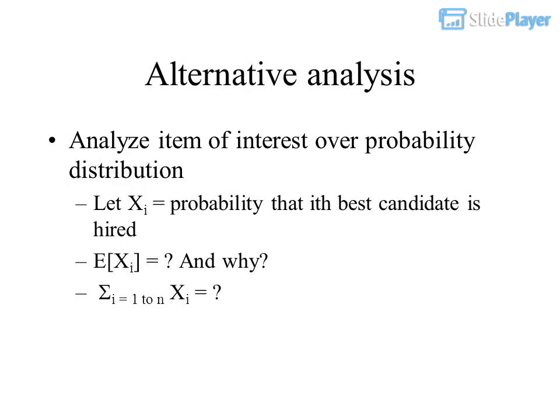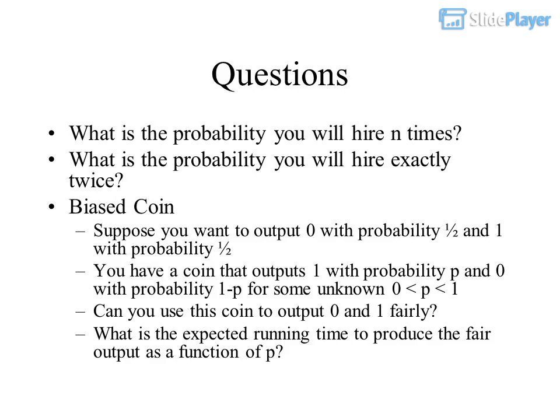Alternative analysis: let Xi equal the probability that the i-th best candidate is hired. Then E[Xi] equals a given value, and the total C equals the sum from i equals 1 to N of Xi. Questions: what is the probability you will hire N times? What is the probability you will hire exactly twice?